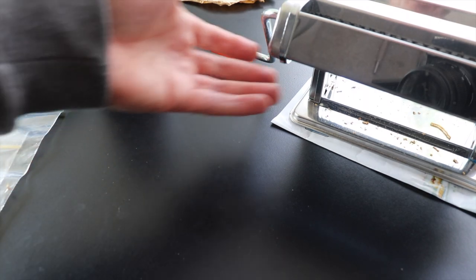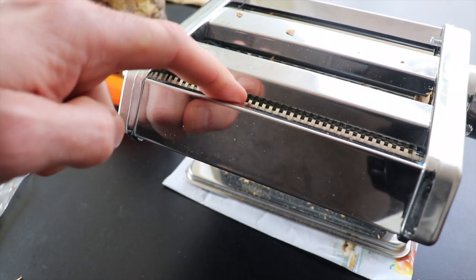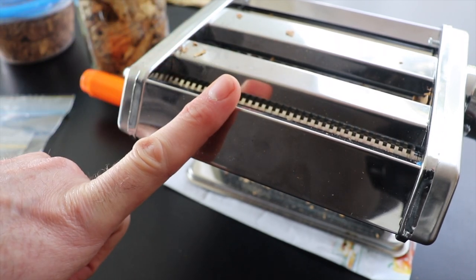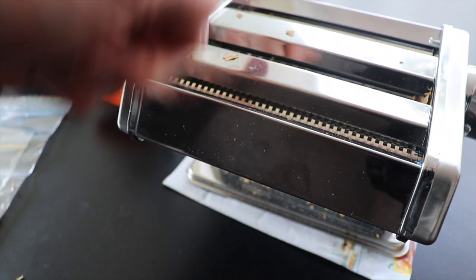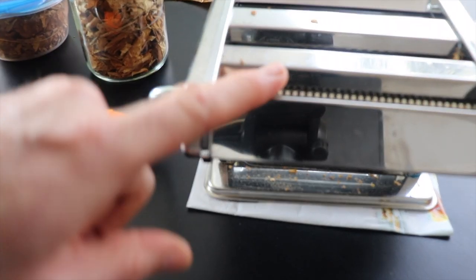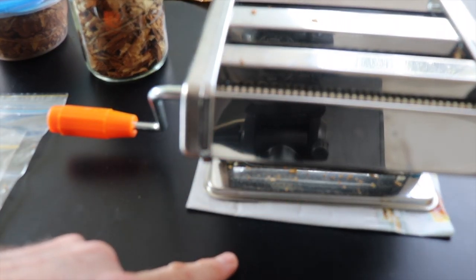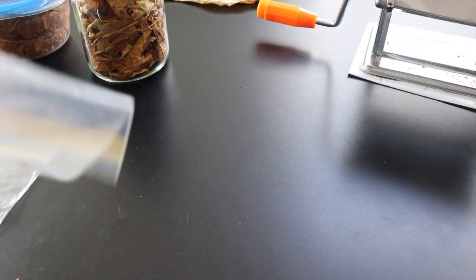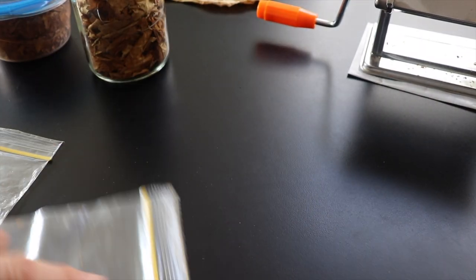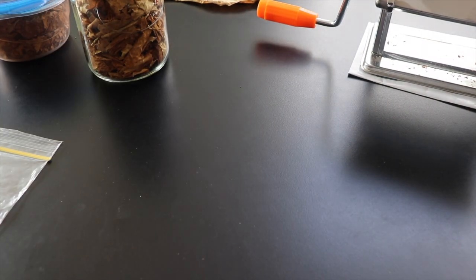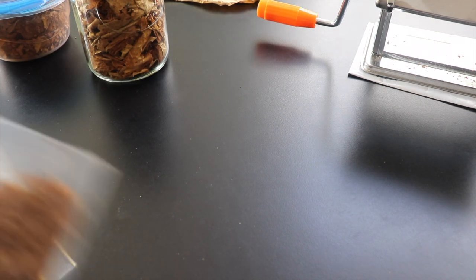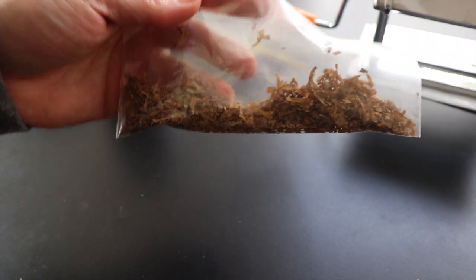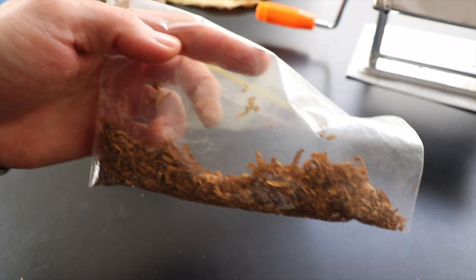Then you take your pasta shredder and put it through the pasta shredder on the thinnest setting. There are lots of videos on YouTube on how to do this. You put it through twice for ribbon cut, and you end up with this. This is some yellow Virginia, and this is some red Virginia. You can blend them as you see fit, or just smoke the red or the yellow by itself.